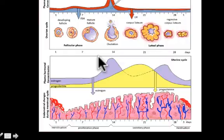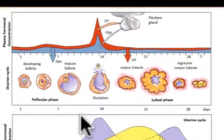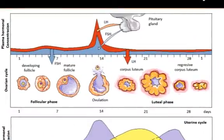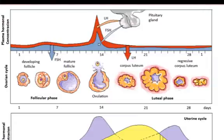Here's how the ovarian and menstrual cycles work. The ovarian cycle is particular to the development and ovulation of the ovary, whereas the menstrual cycle relates to the development of the inner lining of the uterus — the endometrium. Gonadotropin-releasing hormone from the hypothalamus stimulates the release of FSH and LH from the anterior pituitary.